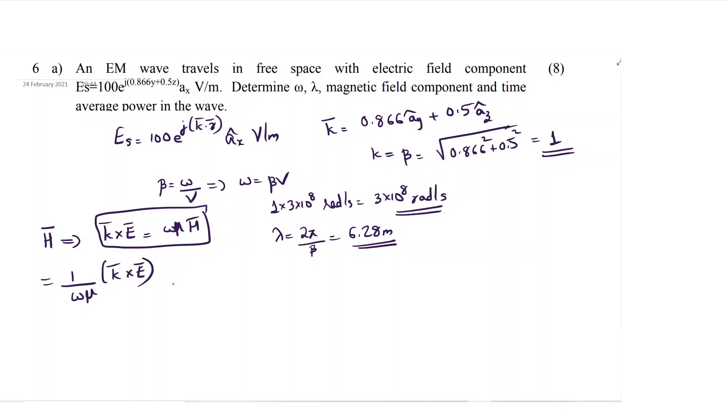Both k and e are vectors. To calculate k cross e, ax, ay, az. Matrix method is easier to calculate the cross product. k x component that is 0, then 0.866, 0.5.